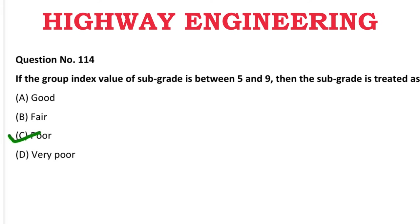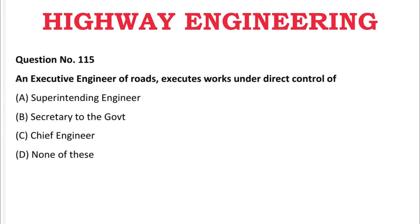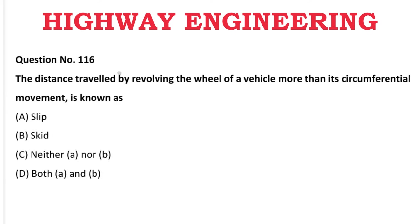Next question: An executive engineer of roads works under the direct control of — A: superintending engineer, B: secretary of government, C: chief engineer, D: none of the above. The correct answer is A, superintending engineer.